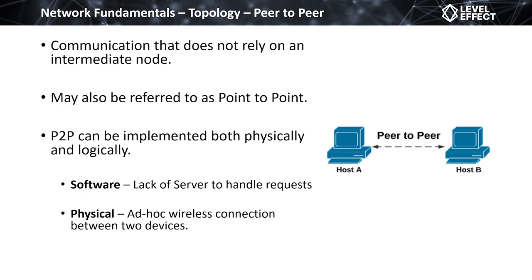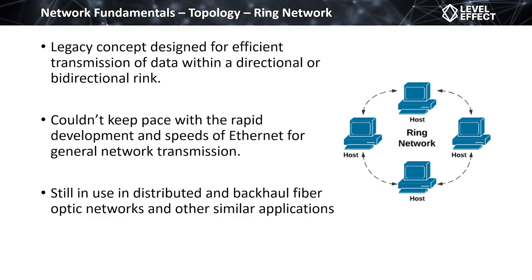Earlier communication technologies like bus had negative drawbacks on network performance. One solution to improve efficiency was the ring network model. Each device is given a token they use at a certain point in time to communicate. Everybody on the network hears everything, but only one device at any given time can communicate when they receive the token. This removed collisions — think of two people on walkie-talkies hitting the button simultaneously: nothing gets heard. Ring topology solved that problem.